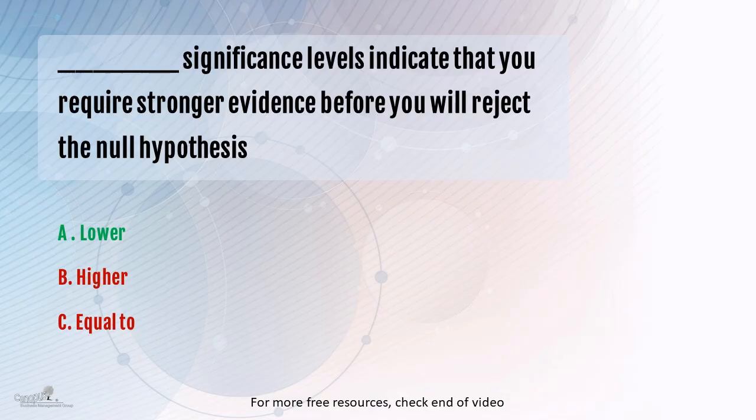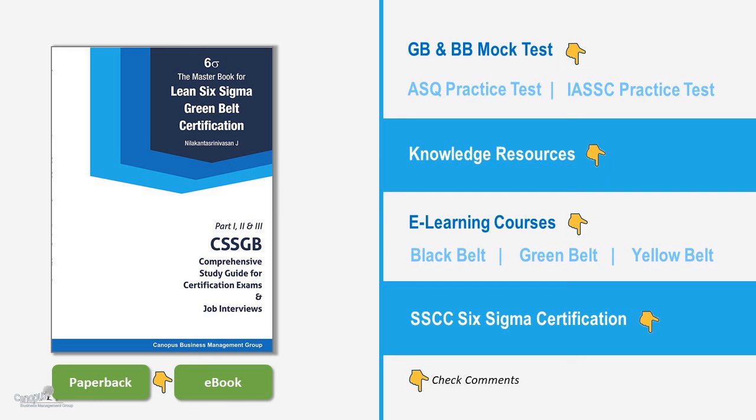So the answer to this question is pretty much straightforward. It is lower significance levels indicate that you require stronger evidence before you will reject the null hypothesis.